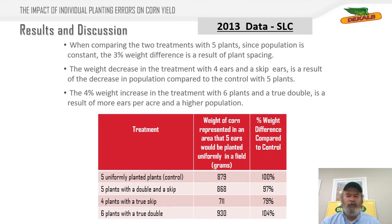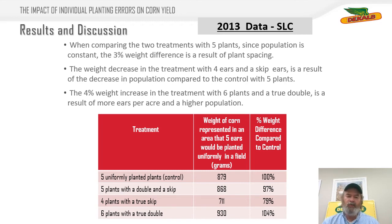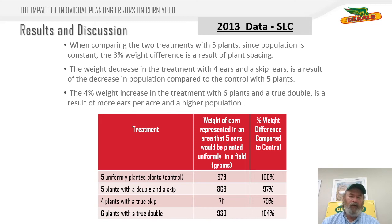When you look at this data — we took these samples, hand-shelled and weighed them — you will see that five uniformly planted plants were the check and made 100% of the yield potential. Where I had a double and a skip, I didn't lose very much. But where I was actually missing a plant — that's 20% of the plants, one out of five — I was missing 20% of the yield. Interestingly, where I had a double, I actually made a little bit more yield. So if your choice is to have a skip or a double, have a double, because you can't compensate for a skip. This was true across both fixed-ear and flex-ear hybrids.